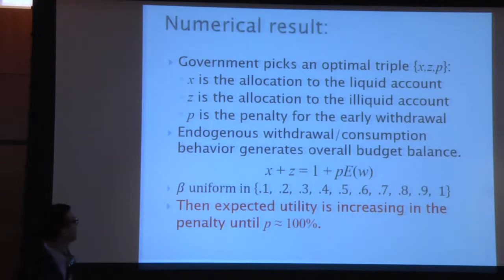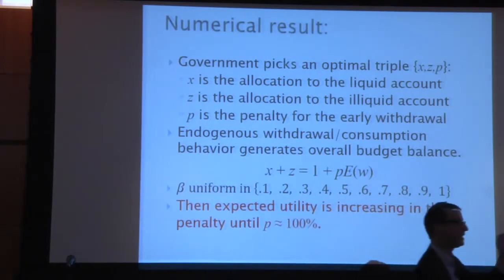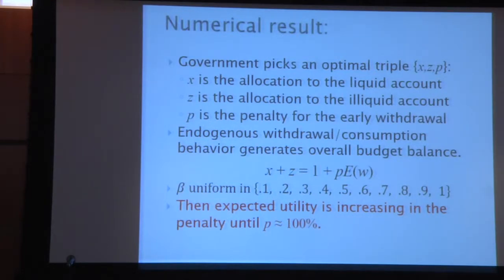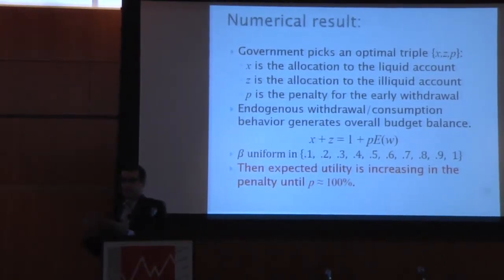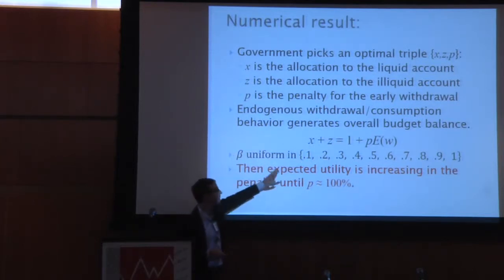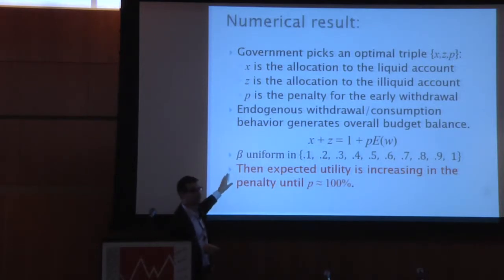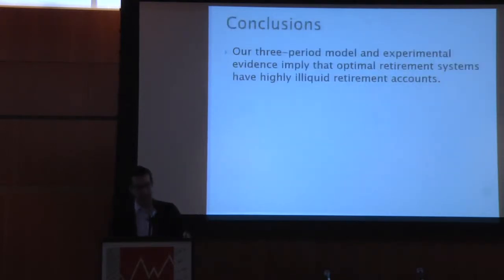Shown numerically: let the government pick an optimal triple — liquid deposit X, illiquid deposit Z, and a social equilibrium penalty P. With budget balance and beta uniform from 0.1 to 1, expected utility is basically increasing in the penalty almost to 100%. In essence, a 100% penalty is the optimal penalty for the retirement savings system in this economy.